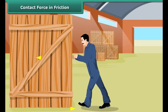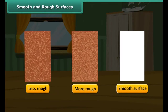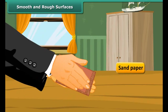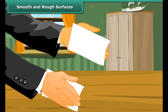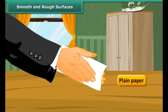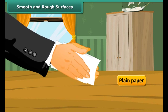Friction also depends on the amount of contact force pushing two surfaces together. Here, a man is trying to push a heavy box, but the box is not moving. When the box is pushed, the bottom of the box and the floor rub against each other and friction resists the motion. The box will move only when a force greater than the friction force is applied. Once it starts sliding, you may find it easier to keep it moving.